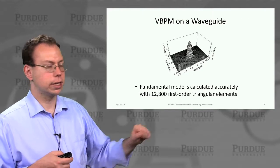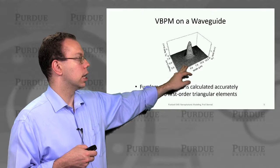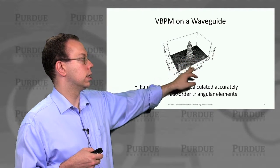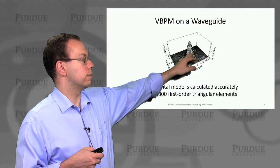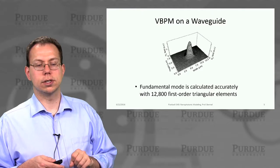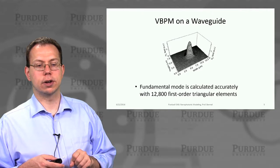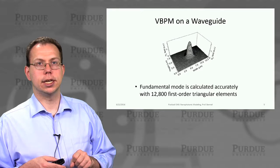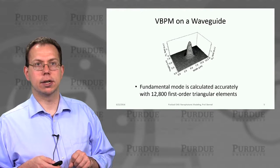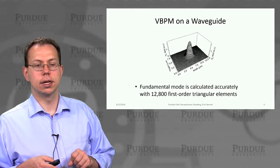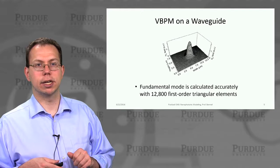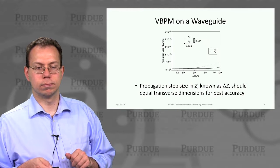This shows what the spatial profile looks like when plotted in the X and Y directions, with the field value calculated on the triangular mesh. Using about 12,800 triangular elements with first-order (linear) accuracy, we get a fairly accurate solution in X and Y. Not surprisingly, it kind of looks like a cosine function in both the X and Y directions.